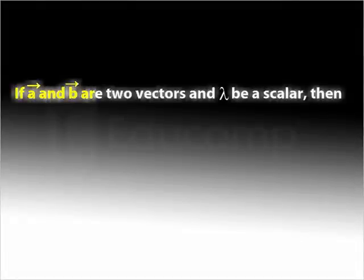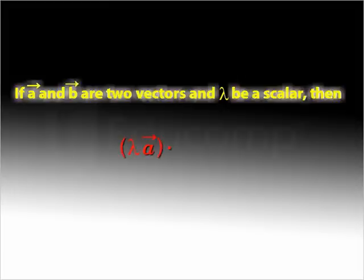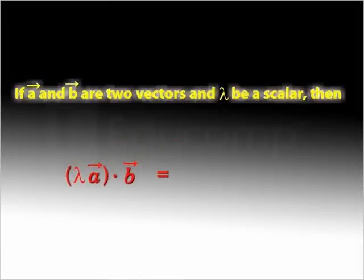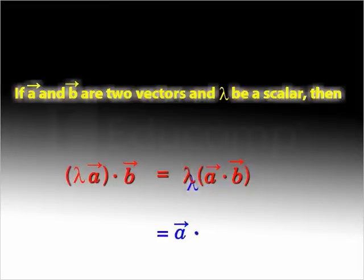If A and B are two vectors and lambda is any scalar, then the dot product of lambda times vector A and vector B is equal to lambda times the dot product of vectors A and B, which is further equal to the dot product of vector A and lambda times vector B.